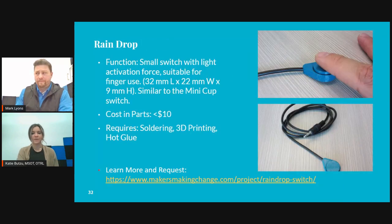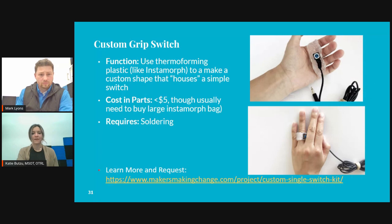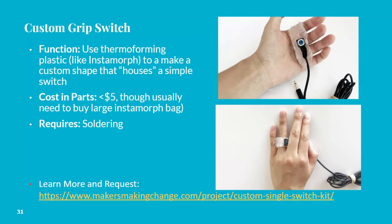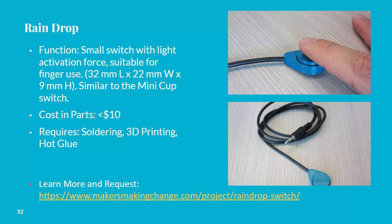This first one is a custom grip switch. That's allowing you to customize it using a variety of things like Instamorph, which is another product that is like moldable plastic. You can see in the picture they're using it almost like rings on a ring finger, or a whole hand switch, depending on what the individual's abilities are. This next one's the raindrop switch, which is comparable to that mini cup switch through AbleNet.